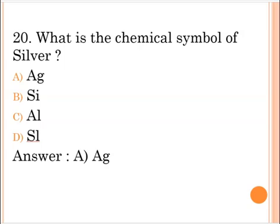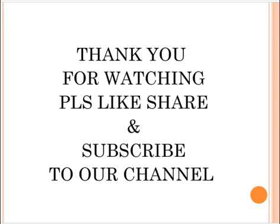Last question: What is the chemical symbol of silver? A. AG, B. SI, C. AL, D. SL. The correct answer is option A, AG. Thank you for watching. Please like, share and subscribe to our channel.